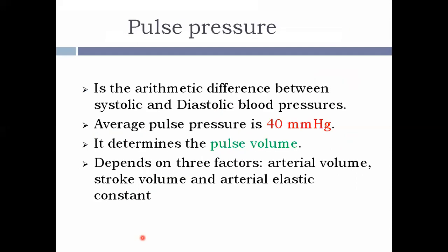The next is pulse pressure. Pulse pressure is the difference between systolic and diastolic blood pressure — SBP minus DBP. The average pulse pressure is around 40 mmHg. Pulse pressure determines the pulse volume, and it is interlinked with three factors: arterial volume, stroke volume, and the elastic content of the artery through which blood is flowing.